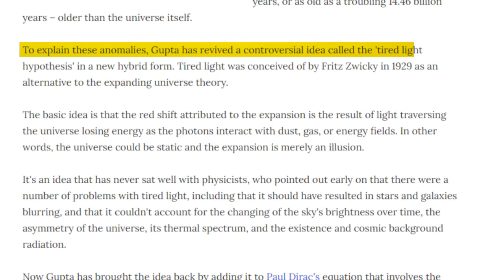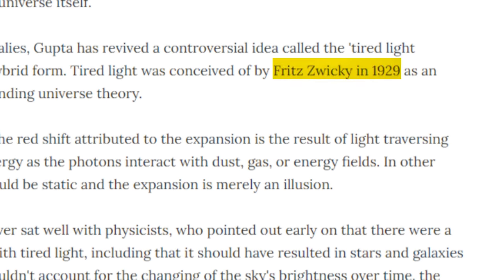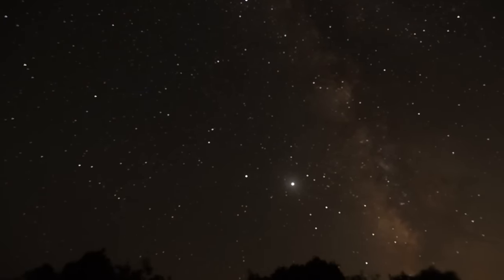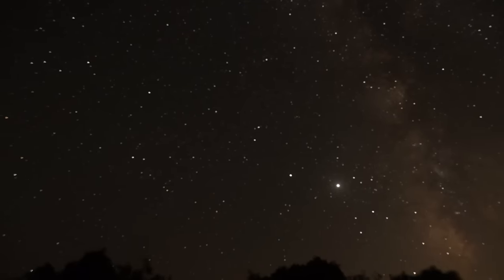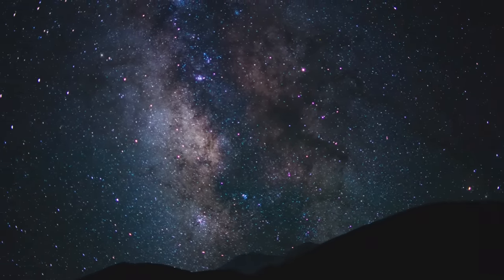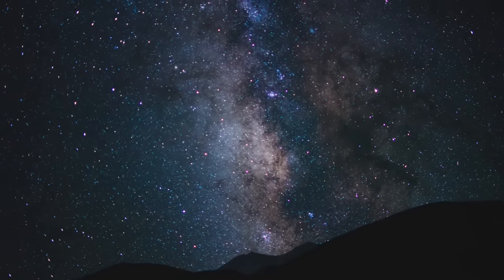Gupta's work addresses an error in redshift, drawing from Fritz Zwicky's 1920s theory of tired light. This theory posits that redshift isn't only due to galaxies moving away, but also because light loses energy as it travels, potentially making the assumption of an expanding universe false or producing inaccurate measurements.